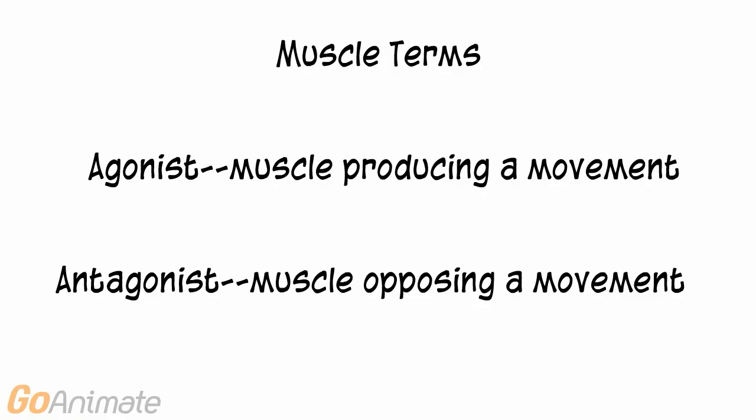In a muscle contraction, the agonist is the muscle producing the movement. The antagonist muscle opposes the movement.